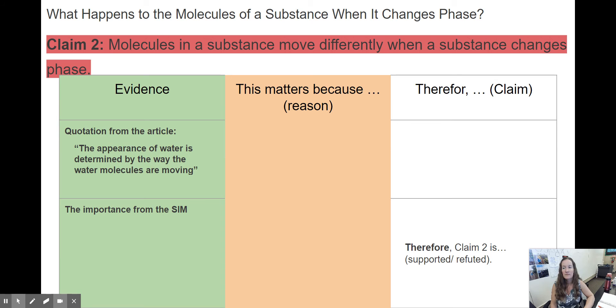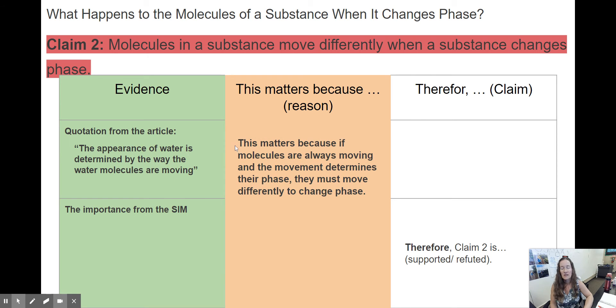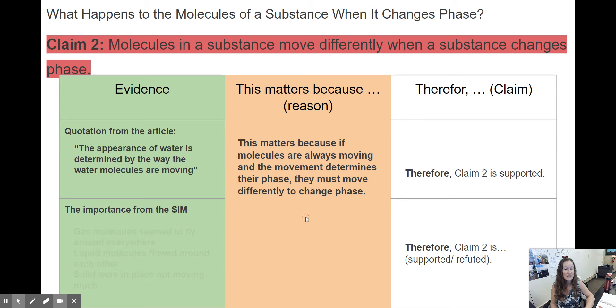So why does that matter? If the appearance of water is determined by the way the molecules are moving, then wouldn't that indicate that the appearance of all substances are probably influenced by the way they're moving? This matters because if molecules are always moving and their movement determines their phase, they must move differently to change phases. Therefore, claim 2 is supported.